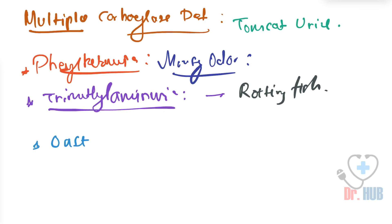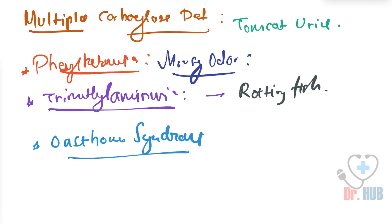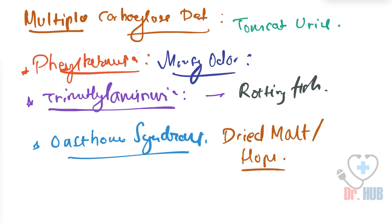Lastly, in case of oast house syndrome, it shows a dried malt as well as a hops odor.